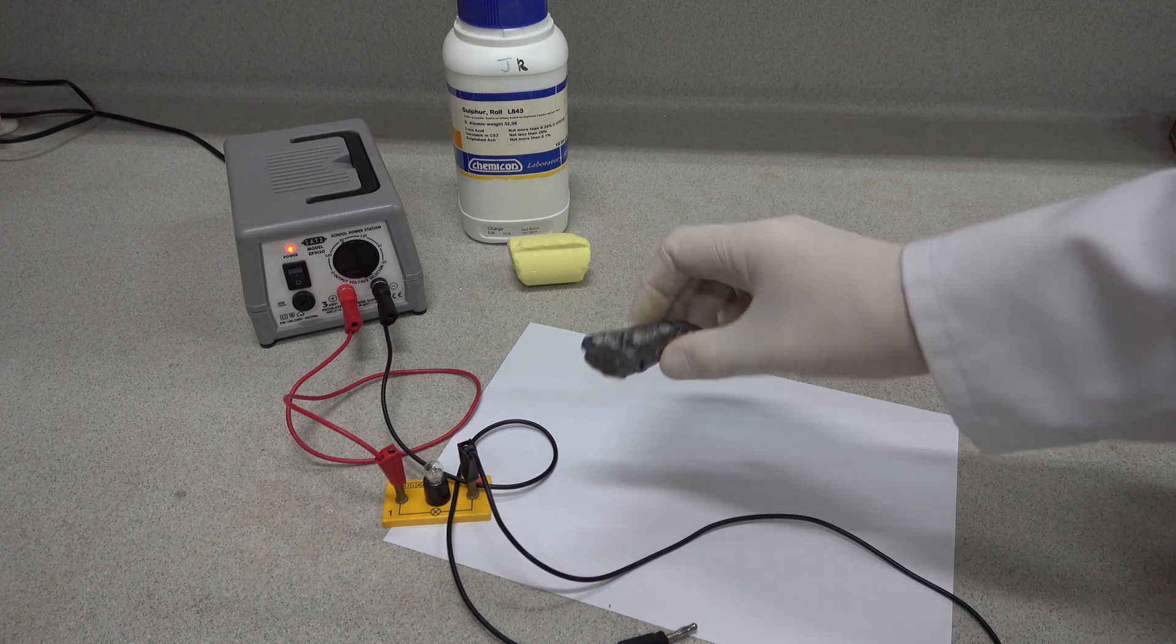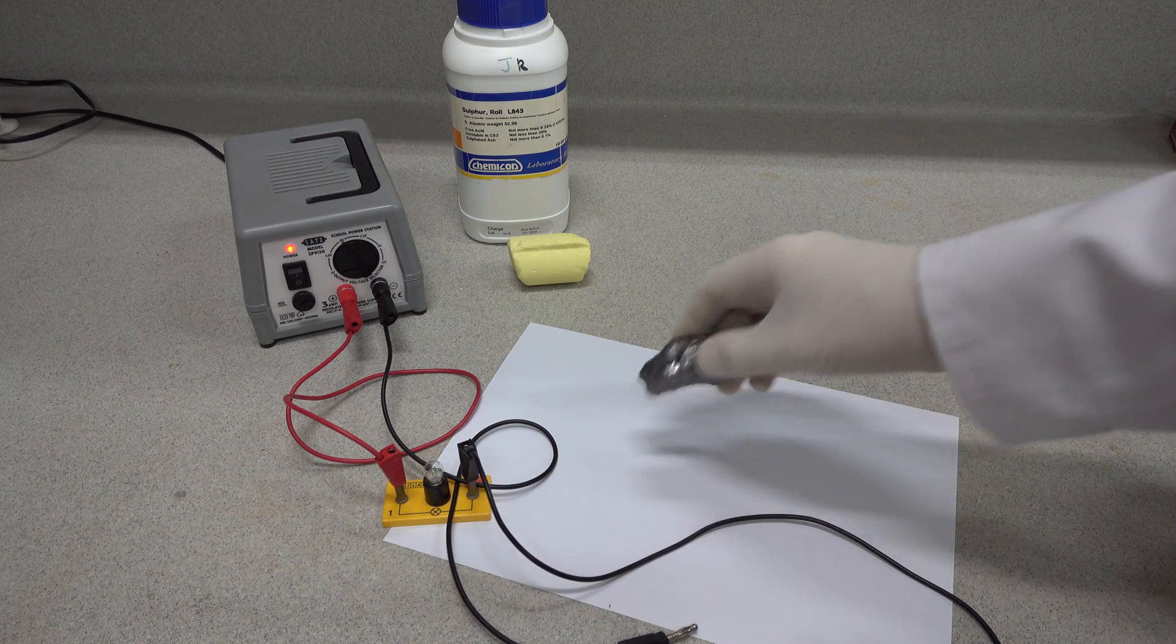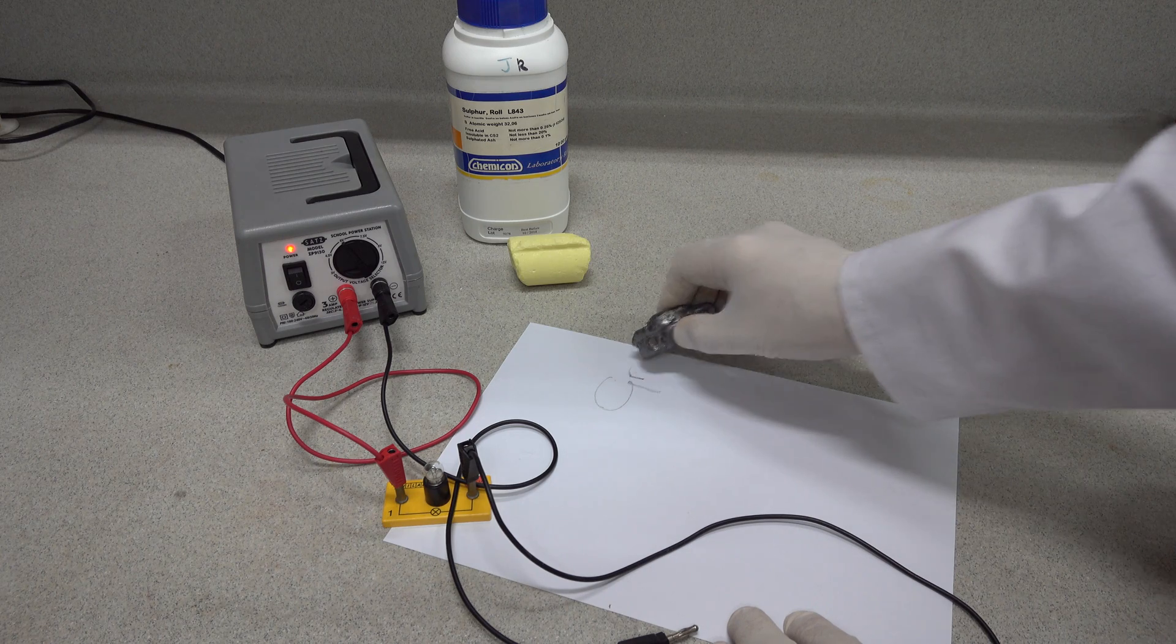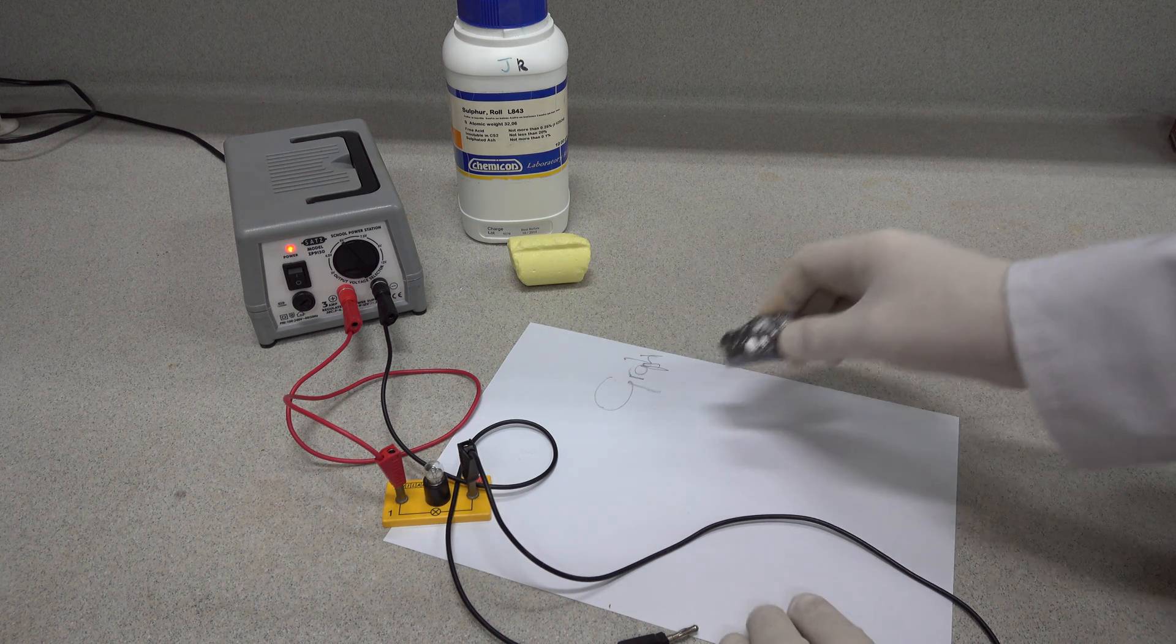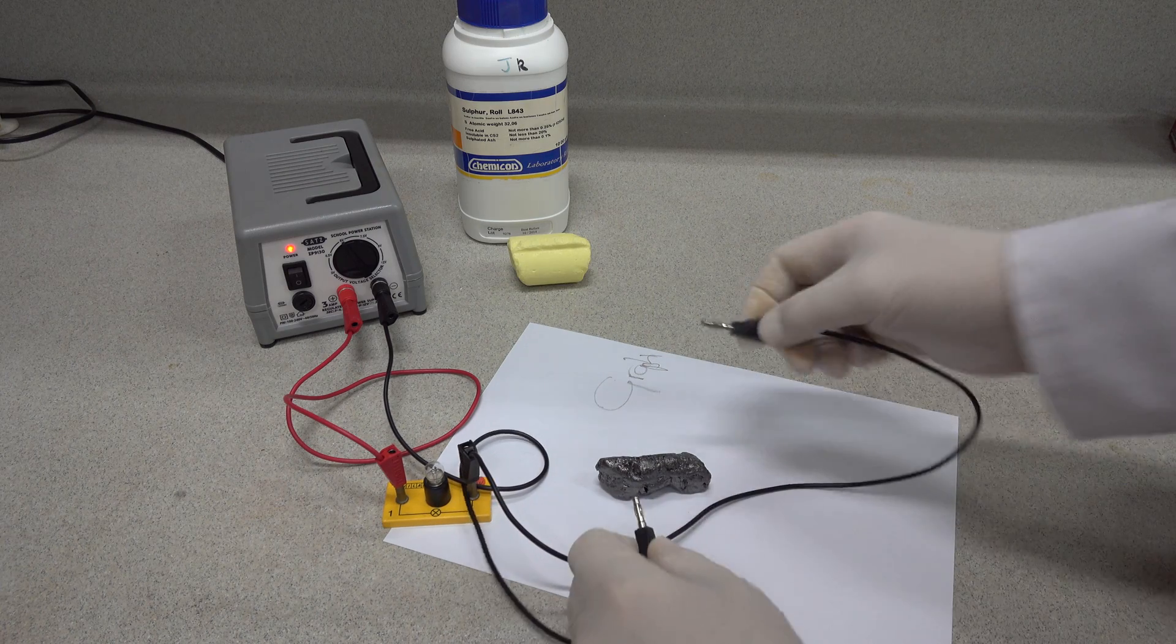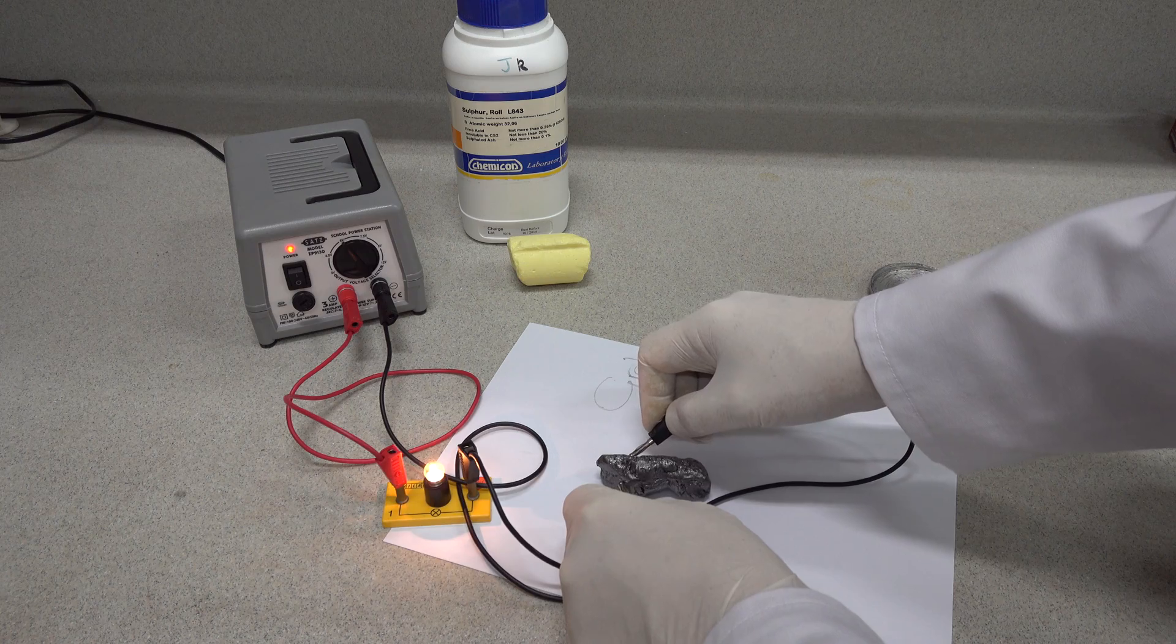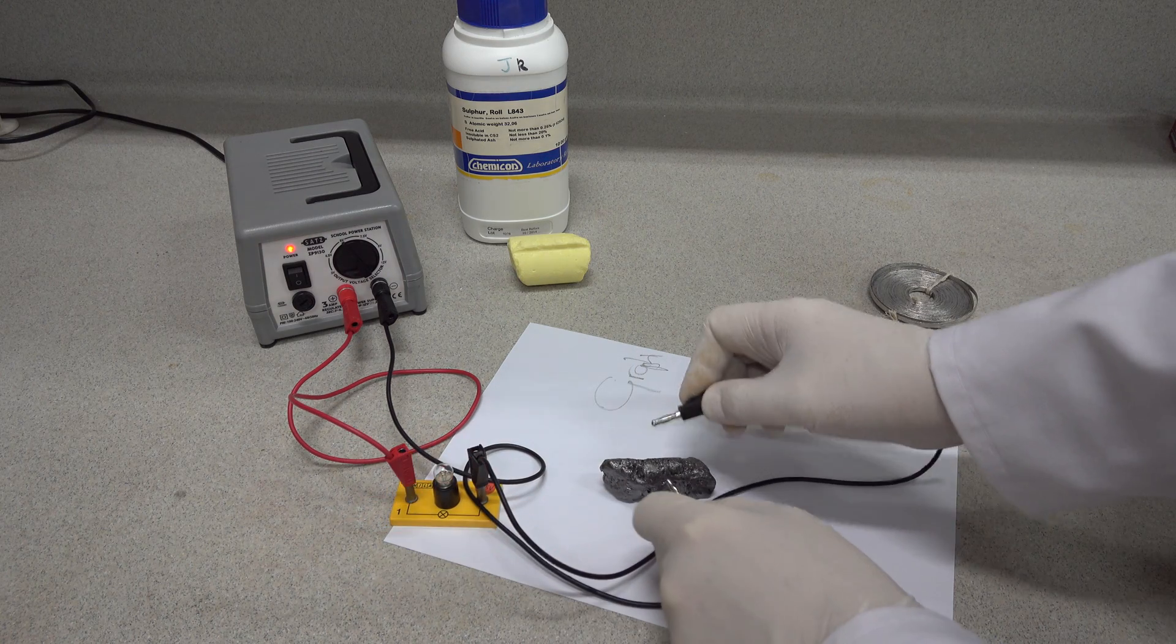For our third element, we've got this sample of graphite. This is of course used in pencils for writing, and we can write with our graphite there. If we put our electrodes onto the graphite, you can see that it too conducts electricity rather well.